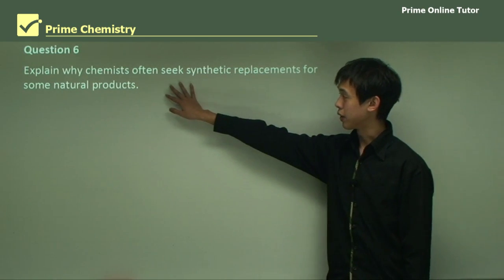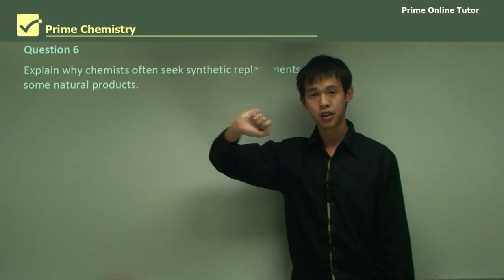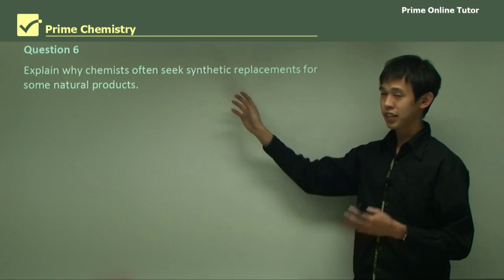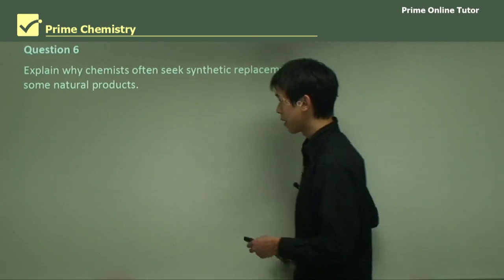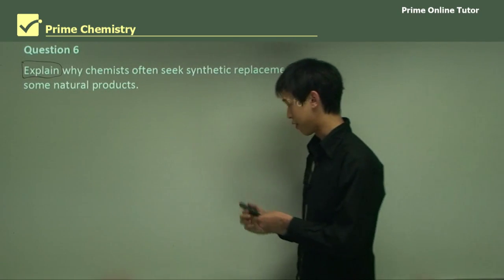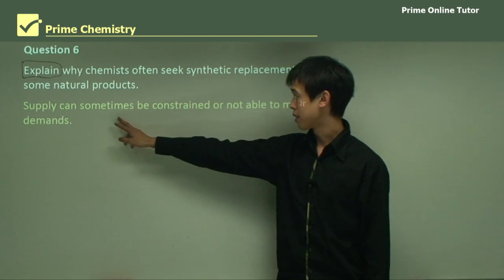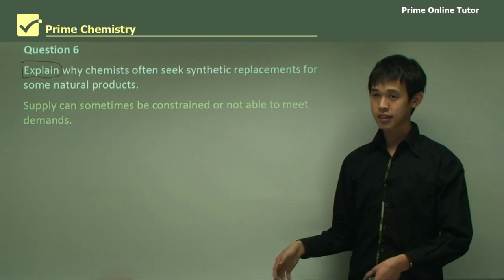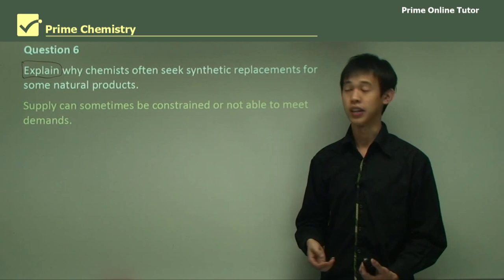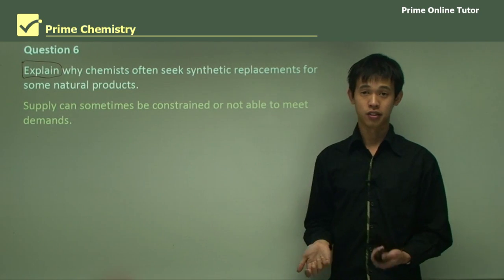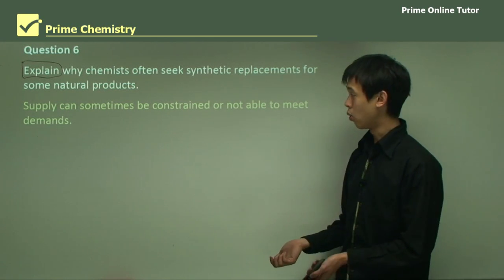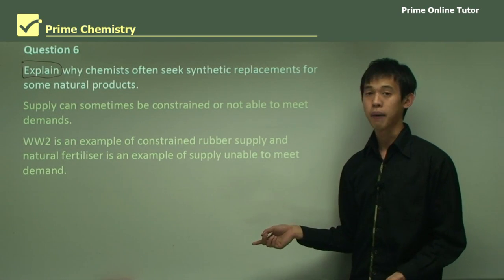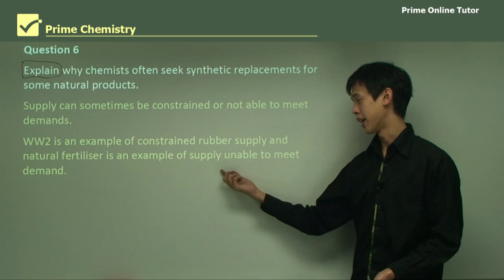Question: Explain why chemists often seek synthetic replacements for some natural products. Supply can sometimes be constrained or unable to meet demand — that's one reason we want synthetic materials, because any country can produce them assuming they have the chemicals available. Supply can be constrained, as in the World War II rubber incident, or simply unable to meet demand, as in the fertilizer case. World War II is an example of constrained rubber supply, while natural fertilizer is an example of supply unable to meet demand.